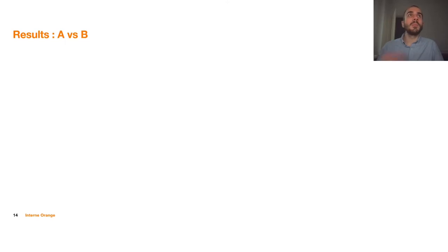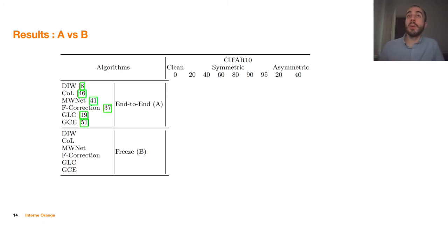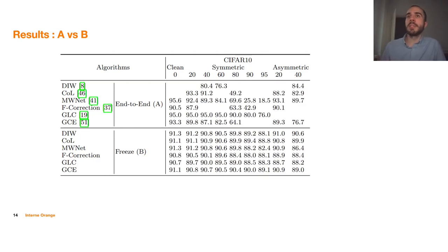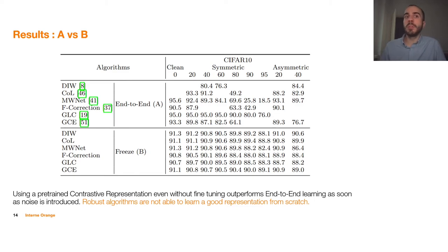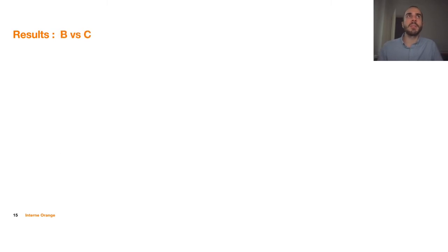The first set of results compares Setup A versus Setup B — end-to-end training versus freezing the SimCLR representation. For clean data, end-to-end learning with robust algorithms is better than freezing the SimCLR representation, meaning SimCLR provides a good representation but not good enough when there is no noisy data. However, as soon as noise is introduced, Setup B outperforms Setup A, meaning robust algorithms are not able to learn a good representation from scratch, and a pre-trained contrastive representation, even without fine-tuning, outperforms end-to-end learning once noise is present.